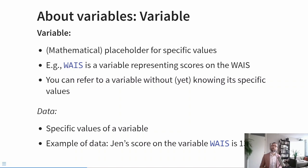You can refer to a variable without yet knowing its specific values. For example, for a sample of 75 students, the variable WAIS represents that unknown collection of values. But we also have data — the specific values that we have collected. An example of data would be: participant Jen scored 138 on the WAIS variable.